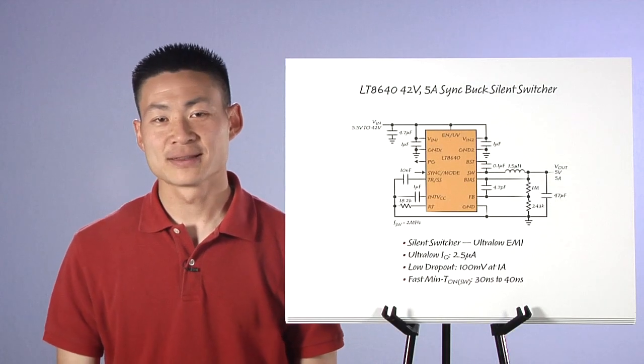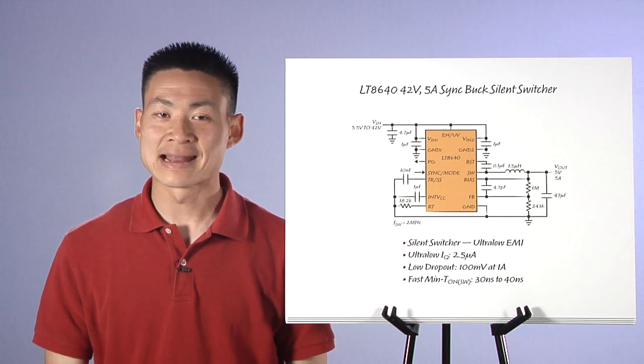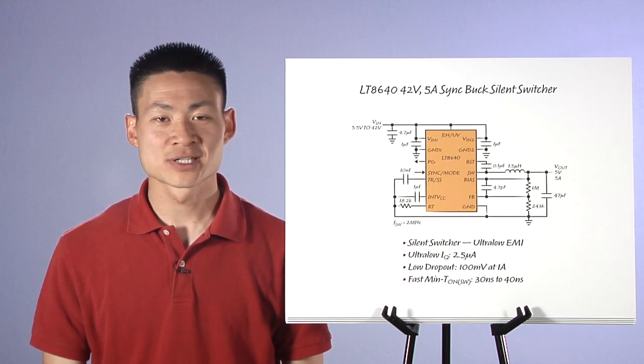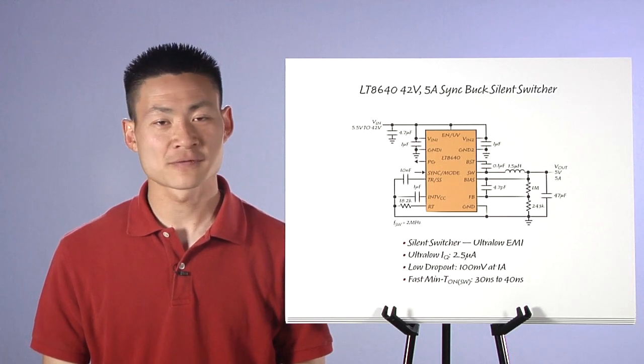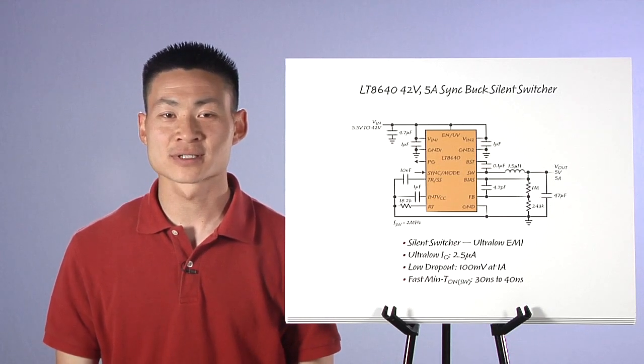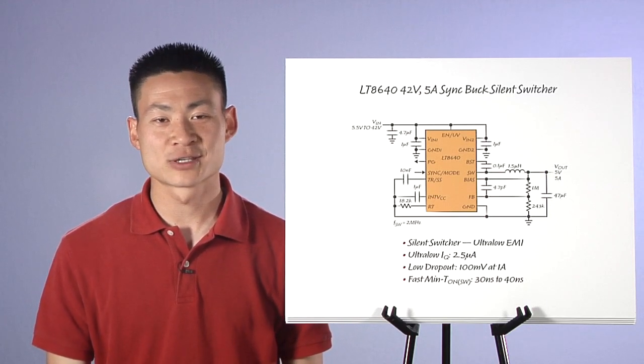In summary, the LT8640's silent switcher architecture enables low EMI emissions and high efficiency at high switching frequencies. This 5 amp synchronous buck has an ultra-low 2.5 microamps quiescent current, wide input voltage range to 42 volts, and low minimum on time and dropout, all in one small QFN package.